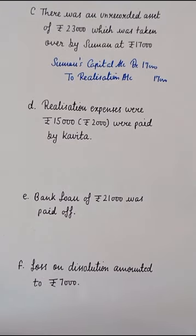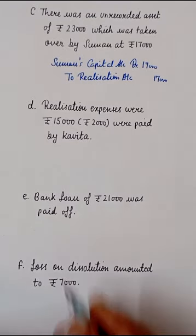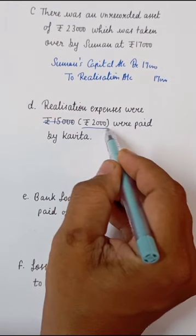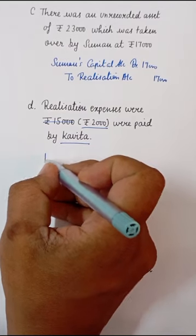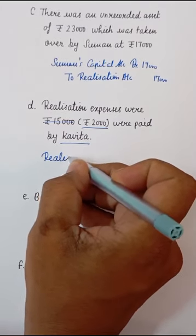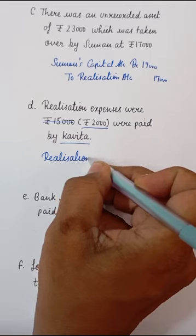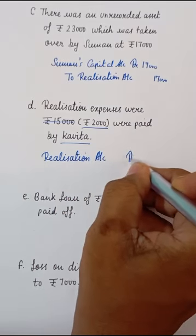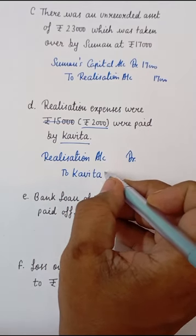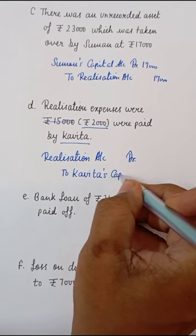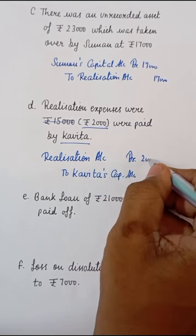चौथा transaction: Realization expenses were Rs.2,000, paid by Kavitha। अगर ये expenses firm खुद pay करती तो entry बनती Realization Account Debit to Bank Account, लेकिन इन expenses को Kavitha pay कर रही है। तो journal entry बनेगी: Realization Account Debit to Kavitha's Capital Account। यानि कि ये expenses borne by firm हैं, paid by partner हैं। और ये entry बनेगी with Rs.2,000।